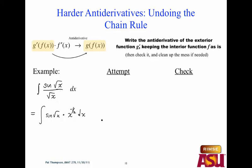Which is g prime of f? Number one — sine of radical x. Therefore, what will our first attempt be? We're looking at the overall structure: what is g prime? So, what's the antiderivative? Negative cosine of root x — that should have been your first attempt. Now the derivative of that is sine of root x times x to the negative one-half — but there's a factor of one-half from the chain rule. So we compare to what we started with.